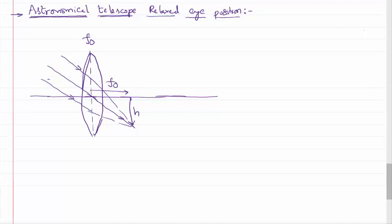So where do they converge? This value is nothing but equal to fo. Here an image is formed having a height h. This image is going to act as an object for the other lens, called the eye lens. This is our eye lens. Let the focal length of this eye lens be fe. Now this eye lens can be adjusted — its position can be changed — such that this image of the objective lens acts as the object for the eye lens.